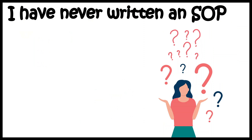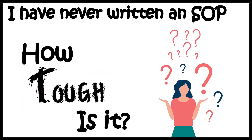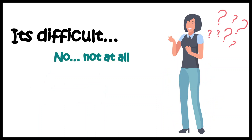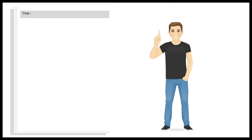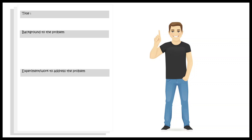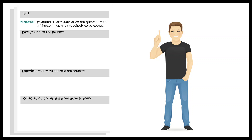Let's begin. Even if you have never written an SOP, it's not as difficult as it seems — it just takes some time since you're new to it. TIFR has a prescribed pro forma which is fairly simple: it begins with a title, then a background of the problem, then experiments to address the problem, then an expected outcome section with alternative strategies, and lastly the references. The title should be around 50 words and clearly summarize the question you want to address and the hypothesis you want to test.